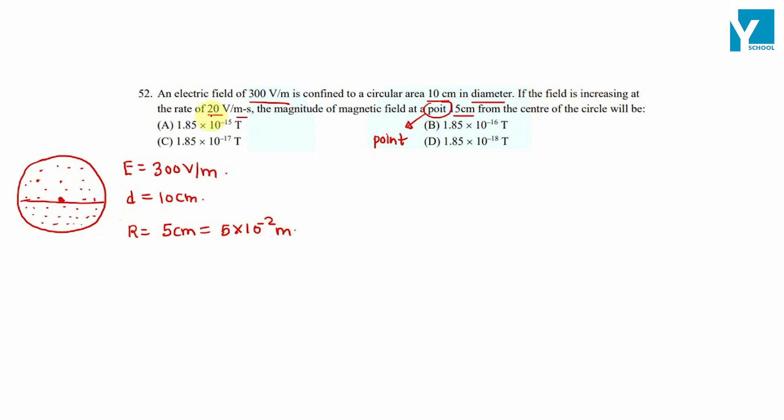If the field is increasing at a rate of 20 volt per meter per second, then dE/dt is equal to 20 volt per meter second. The magnitude of the magnetic field at a point 15 centimeter away from the center of the circle.